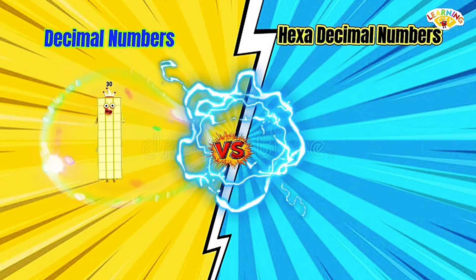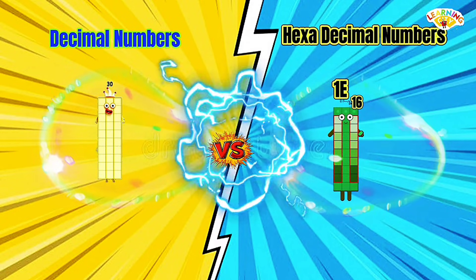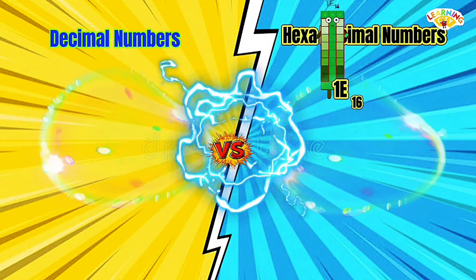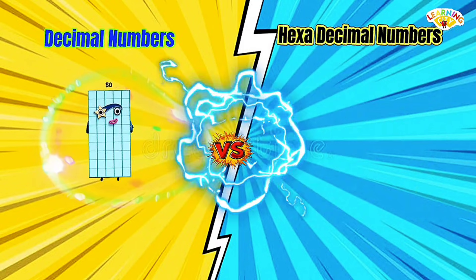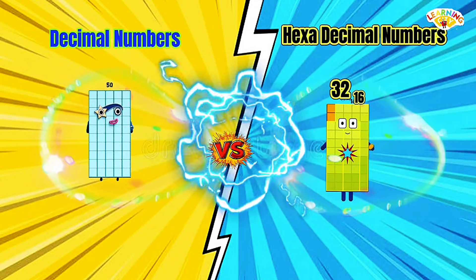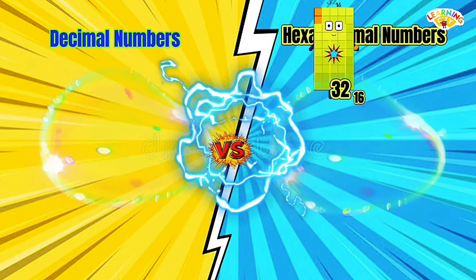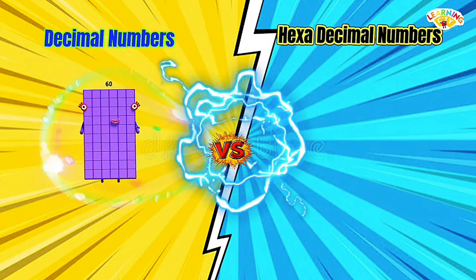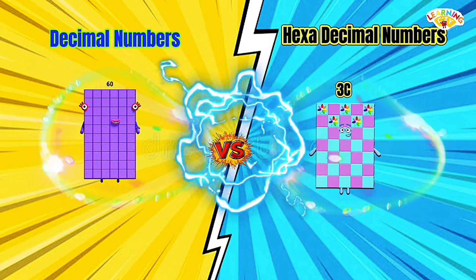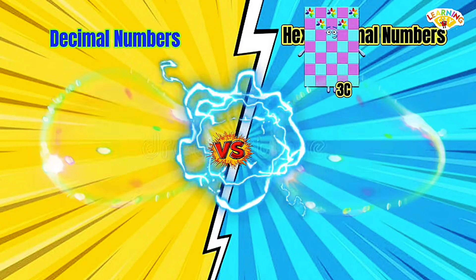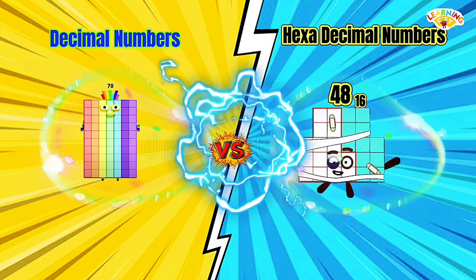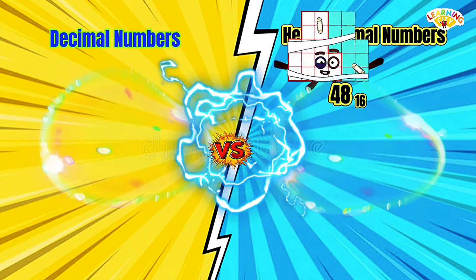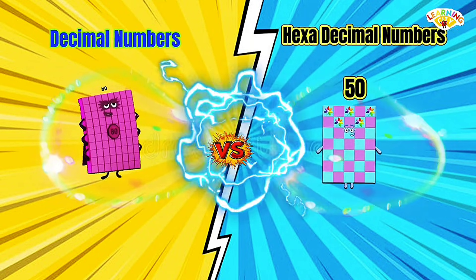Decimal 30 equals hexadecimal 1E. 40 equals 28. 50 equals 32. 60 equals 3C. 70 equals 48. 80 equals 50.